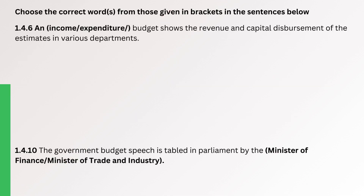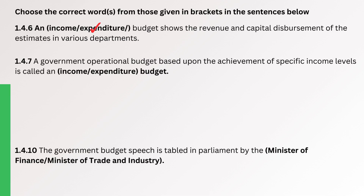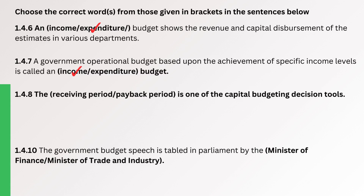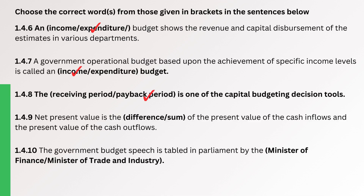Question. An expenditure budget shows the revenue and capital disbursement of the estimates in various departments. The correct answer is Expenditure. Question. A government operational budget based upon the achievement of specific income levels is called an Income budget. The correct answer is Income. Question. The payback period is one of the capital budgeting decision tools. The correct answer is Payback period. Question. Net present value is the difference between the sum of the present value of the cash inflows and the present value of the cash outflows. The correct answer is Difference. Question. The government budget speech is tabled in Parliament by the Minister of Finance. The correct answer is Minister of Finance.